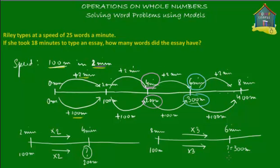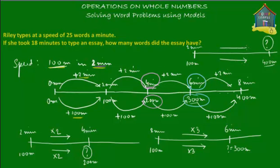What if you want to find out how much time it takes to walk 400 meters at the speed of 100 meters in 2 minutes? You find the factor the distance has gone up by: 400 divided by 100 is a factor of 4. The same factor applies to the timeline: 2 minutes times 4 equals 8 minutes. So it takes 8 minutes to walk 400 meters.